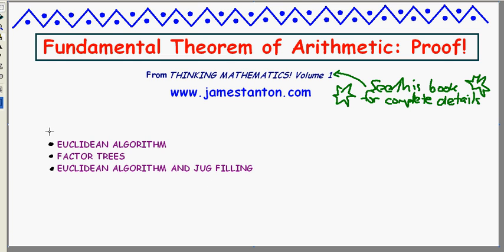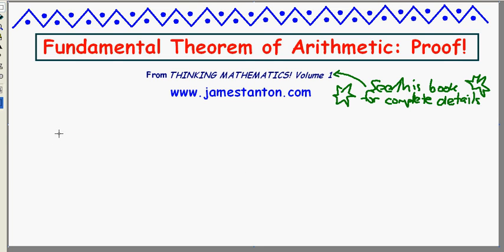and the Euclidean algorithm and the jug-filling problem. So I'm afraid you have to look at those videos first, and now I'm going to address the question: are all factor trees indeed going to give the same list of primes at the end? We can answer it, but we need the key property of primes. Here goes.